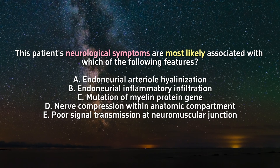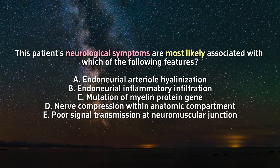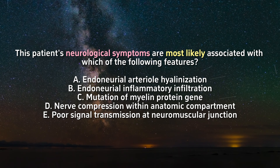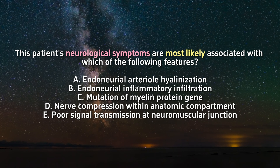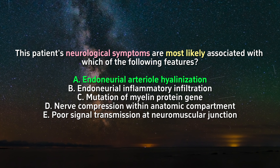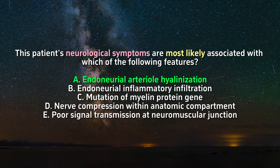This patient's neurological symptoms are most likely associated with which of the following features? The correct answer is A: endoneurial arterial hyalinization.